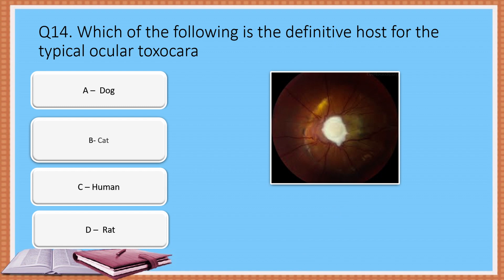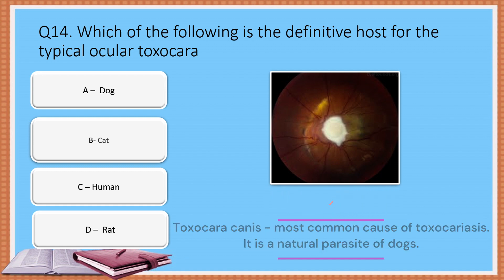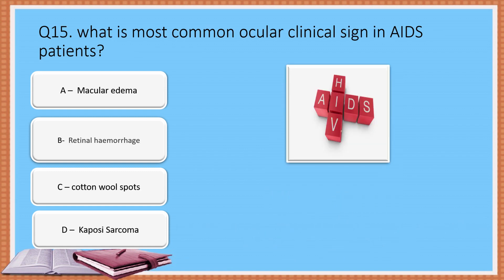Question 14: Which of the following is the definitive host for typical ocular Toxocara? Option A: Dog. Option B: Cat. Option C: Human. Option D: Rat. The correct answer is Option A: Dog. Toxocara canis is the most common cause of toxocariasis and is a natural parasite of dogs.